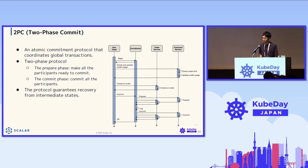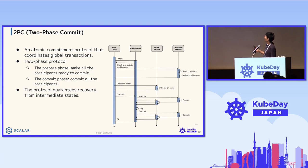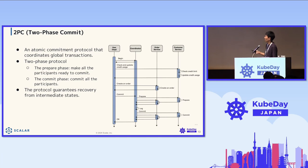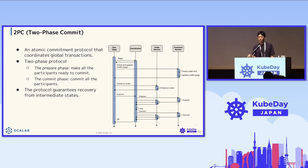Let's move on to two-phase commit (2PC). 2PC is an atomic commitment protocol that coordinates global transactions. After beginning a transaction, the application checks and updates the credit limit, creates an order, and when ready to commit, asks the coordinator. The coordinator does a prepare phase, making all participants ready to commit, then commits the log for persistence, and finally commits all participants. The protocol guarantees recovery from intermediate states, so application developers don't need to handle transaction failure recovery themselves.